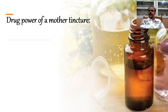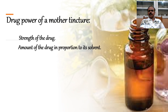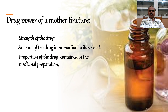Drug power of a mother tincture means the strength of the drug — the amount of the drug in proportion to its solvents. It indicates the proportion of the drug contained in the medicinal preparation. For example, drug power 1/6 means in total 6 parts, 1 part is medicinal substance and 5 parts are solvents. According to drug power, the amount of vehicle and tincture is determined.